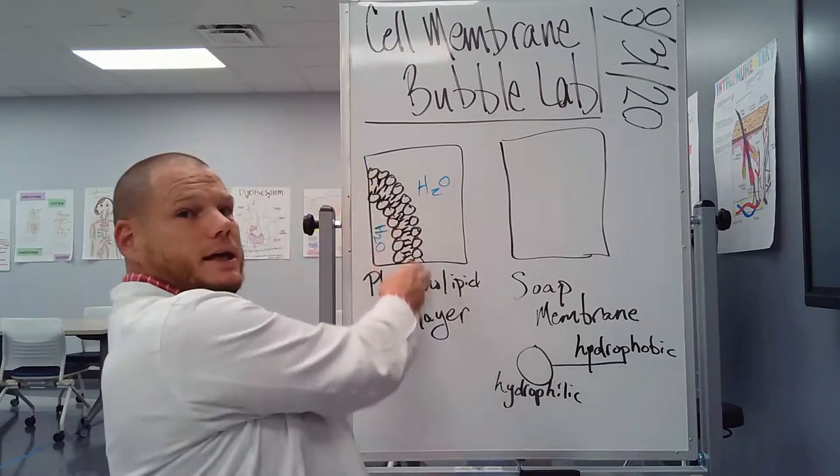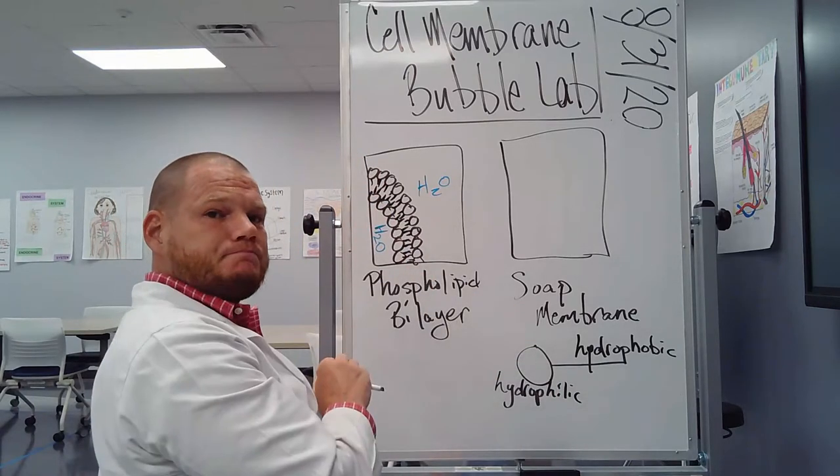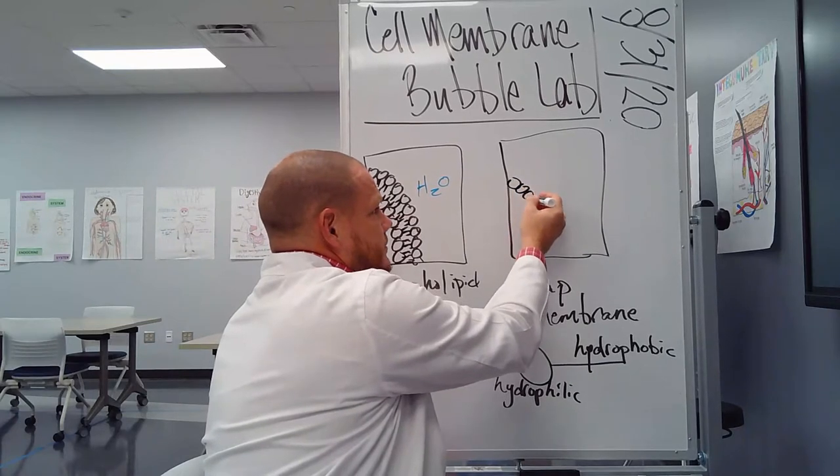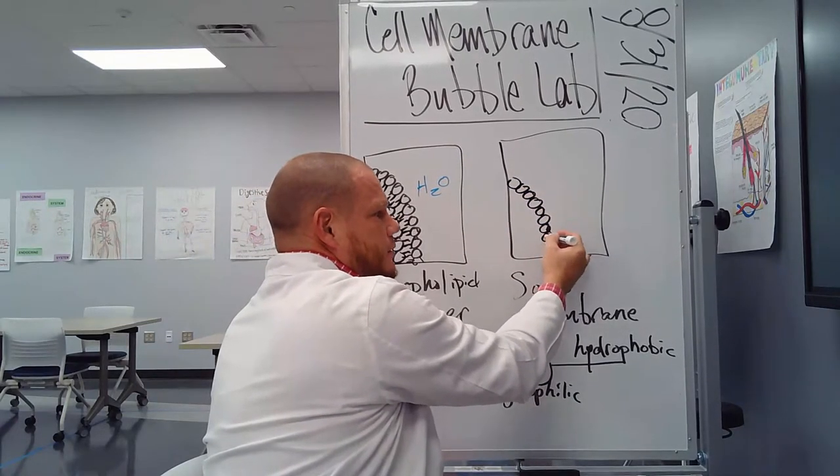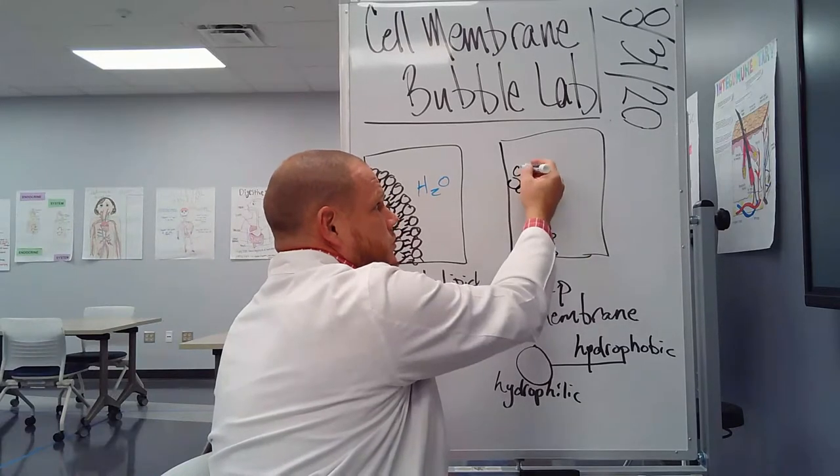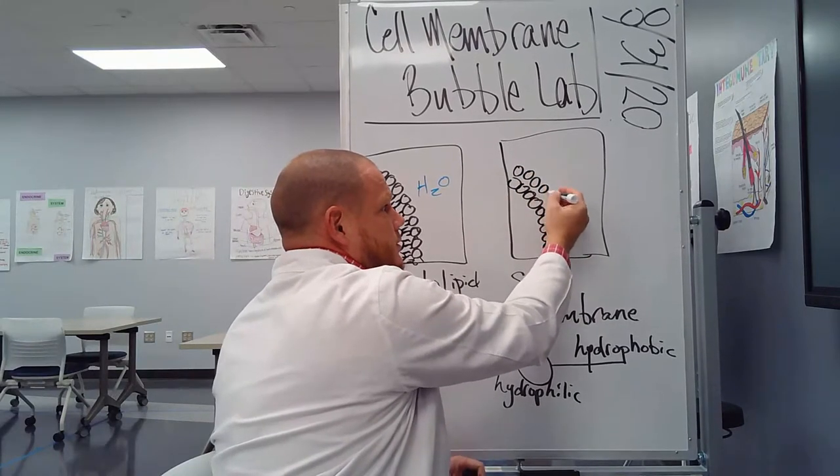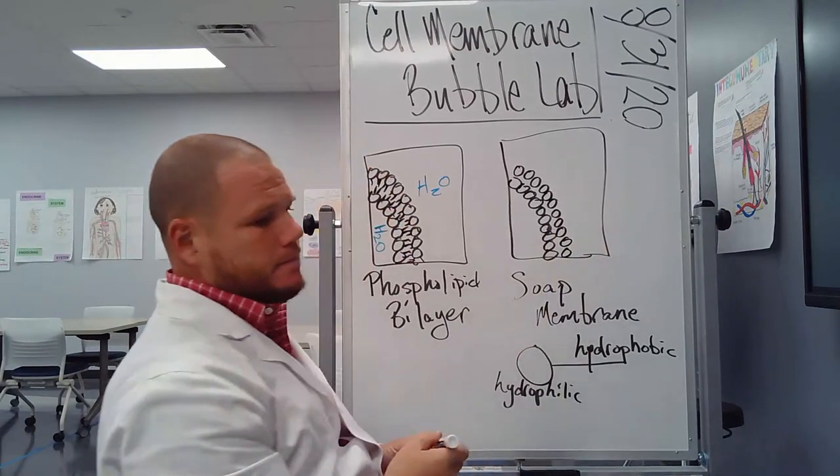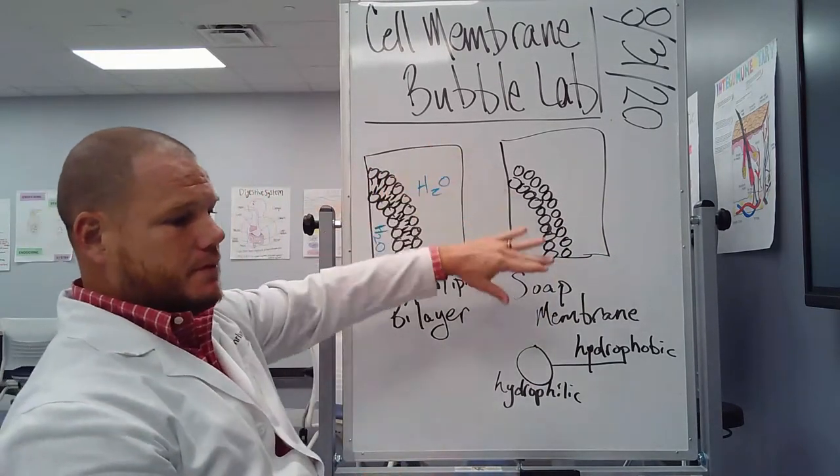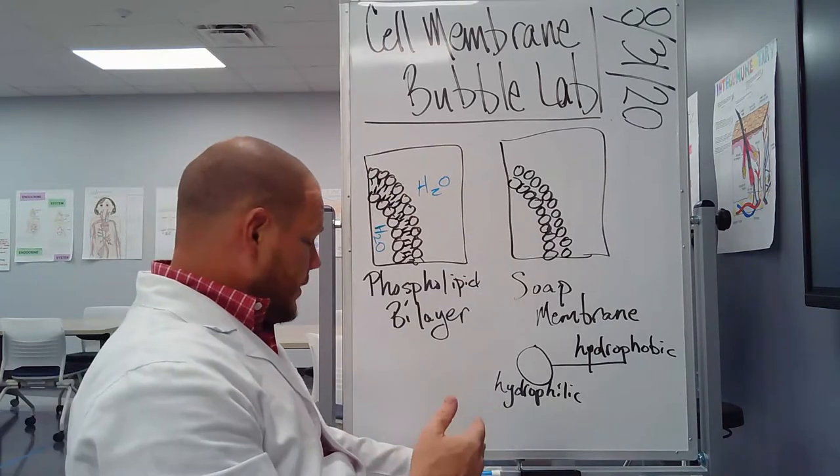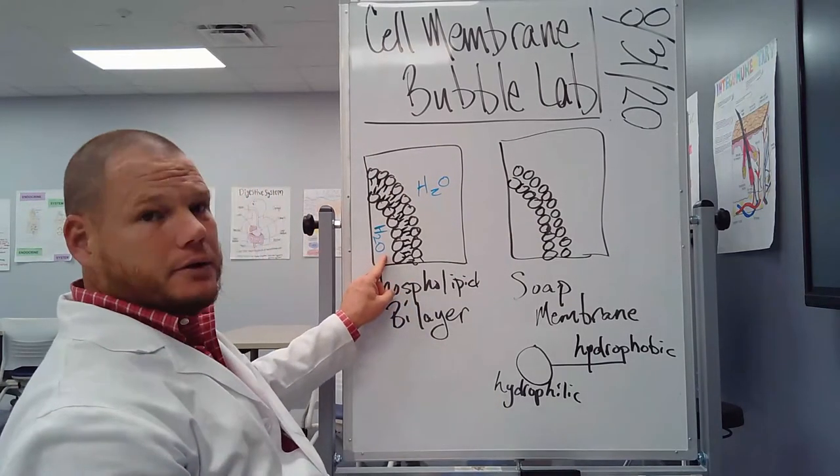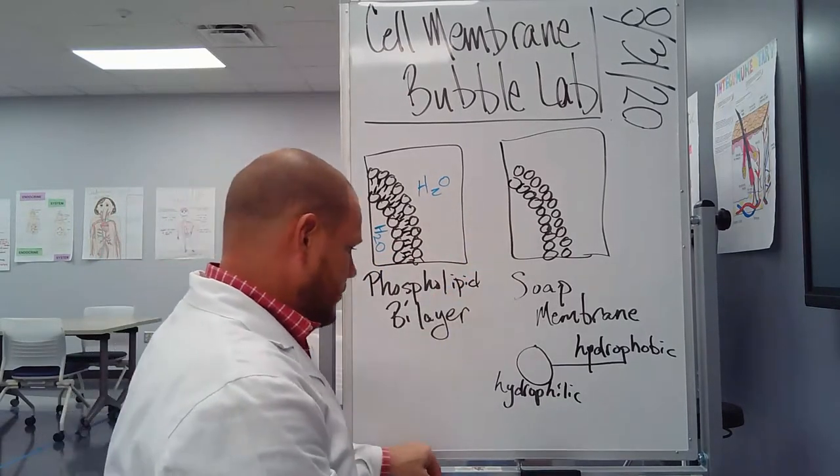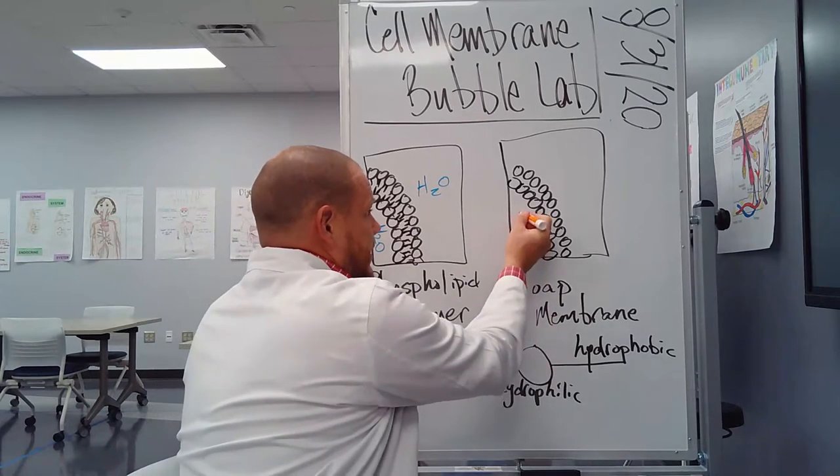So if we draw a soap bubble, kind of like we drew our cell membrane bubble, again, we're going to have some heads that are, remember, hydrophilic or attracted to water. So that's my membrane. Similar to the cell. In this case, we don't have water inside the soap bubble. A soap bubble has trapped air inside of it. Air is in here.